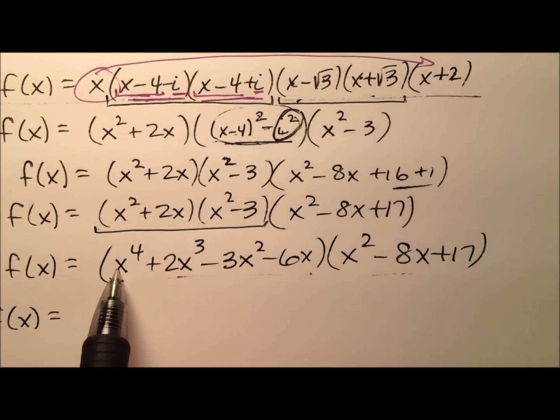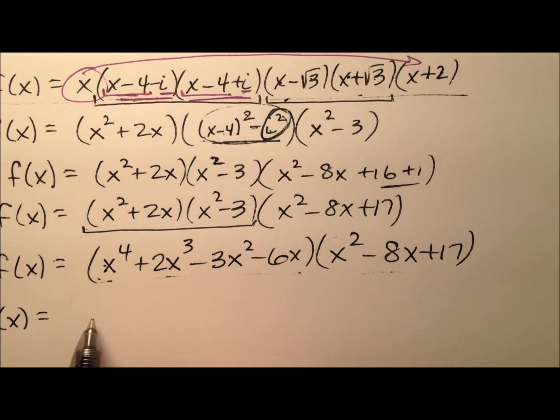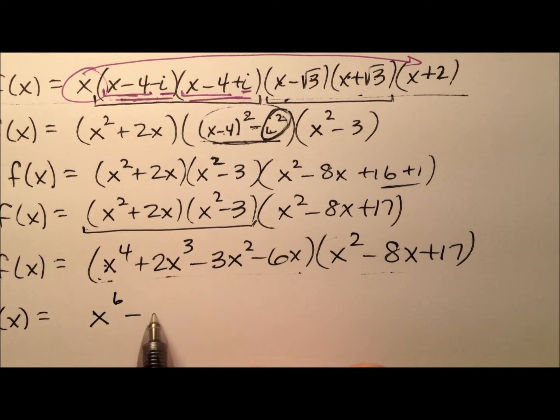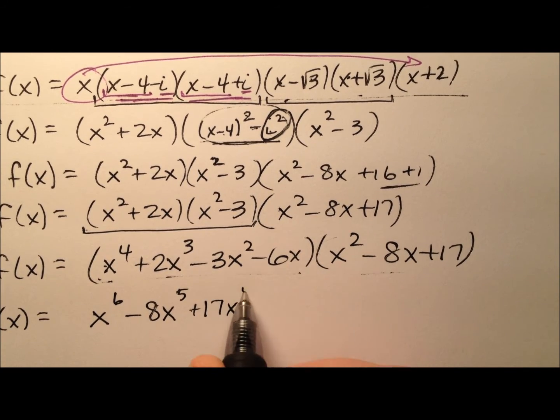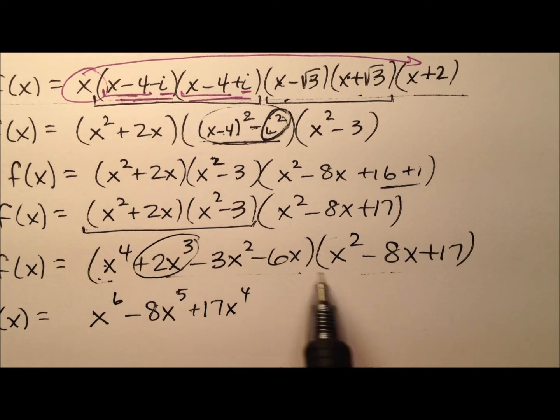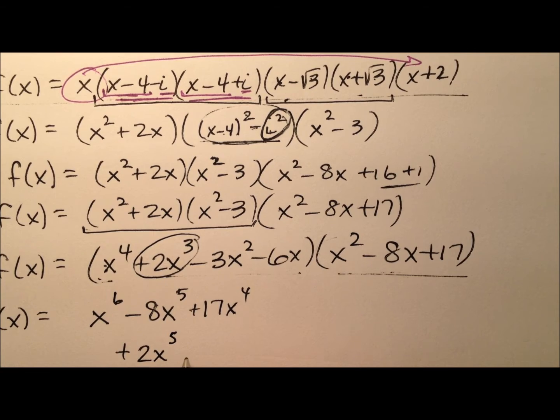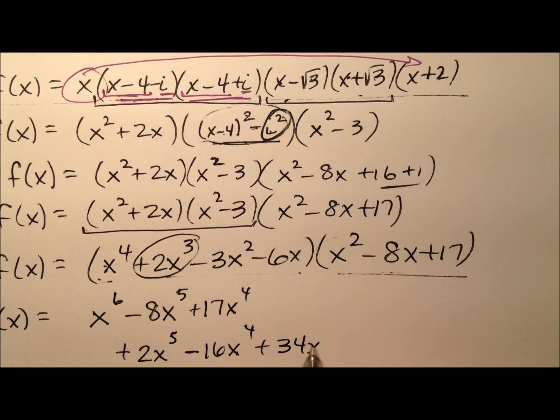Okay, so we're going to move an x to the fourth. We're going to push him through all three of these terms. So x to the sixth minus 8x to the fifth plus 17x to the fourth. Now we're going to take this positive 2x cubed and multiply him through. So that's going to be a positive 2x to the fifth. Let's see, minus 16x to the fourth plus 34x cubed.